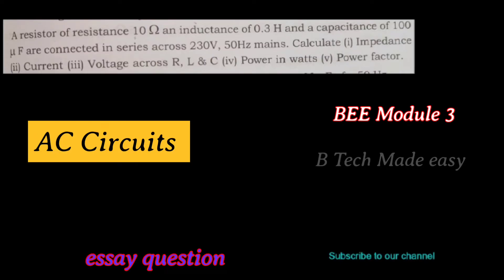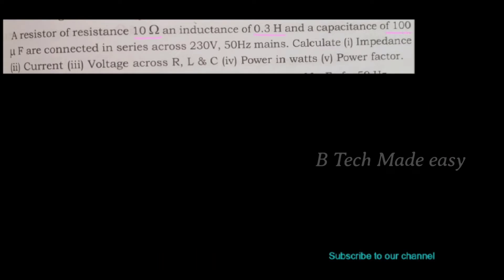A resistor of resistance 10 ohm, an inductance of 0.3 henry, and a capacitance of 100 microfarad are connected in series across 230 volt, 50 hertz mains. We have to find out the impedance, current, voltage across R, L and C, power in watts, and power factor.